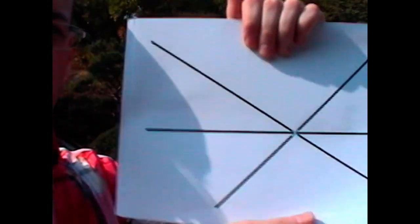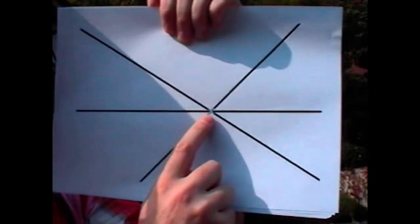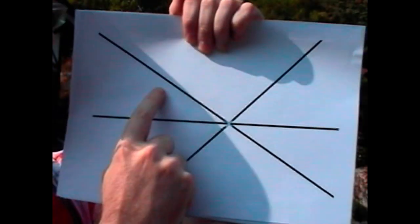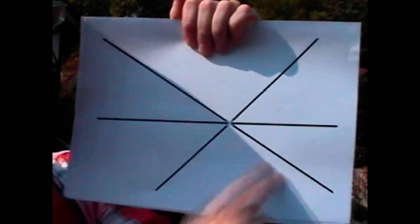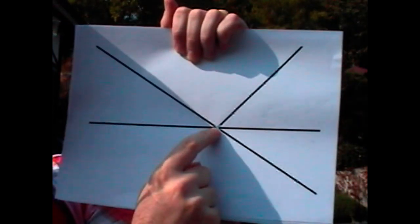You're going to take a sheet of paper and put a dot right at the center of it, or almost. And this is the dot in blue here, and you're going to run 1, 2, 3 lines through that dot that you made.